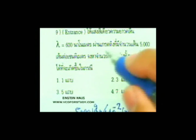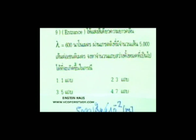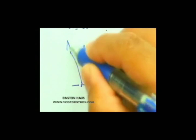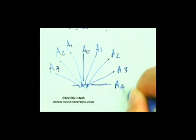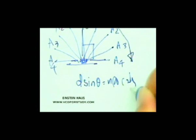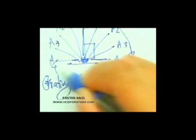เมื่อเราได้ระยะ d แล้ว Lambda เป็น 600 นาโนเมตร คำถามที่ถามว่าแถบสว่างทั้งหมดที่เป็นไปได้หมายความว่า เหมือนกับ double slit นั่นเอง คือ A0, A1, A1, A2, A2, A3, A3 อย่างนี้ เวลาเจอโจทย์แบบนี้คำนวณจากเส้นกลางวัดไปถึงมุมฉาก สูตรคือ D sin θ = N Lambda